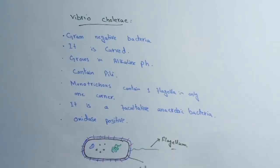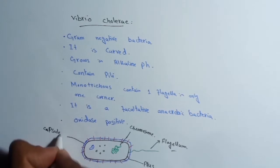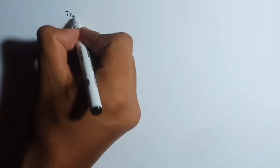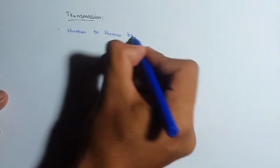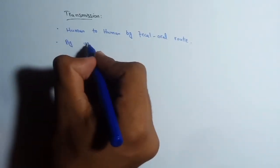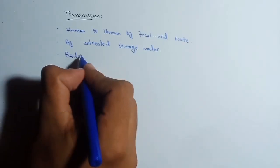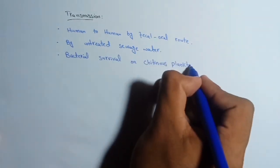Now we will study the transmission of cholera. Cholera is transmitted by fecal-oral route human to human, meaning it is transmitted by the feces of infected person to the healthy one. It is also transmitted by untreated sewage water and by bacterial survival on the chitinous plankton.